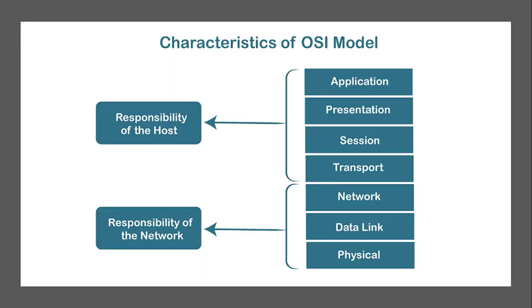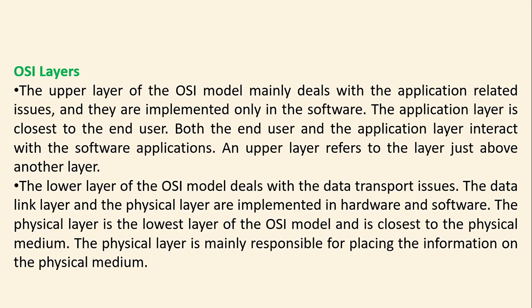The first four upper layers — application, presentation, session, and transport — are the responsibility of the host. The lower layers — network, data link, and physical — are the responsibility of the network. The upper layers mainly deal with application-related issues and are implemented only in software, with the application layer closest to the end user. The lower layers deal with data transport issues; the data link and physical layers are implemented in hardware and software, with the physical layer being the lowest and closest to the physical medium.